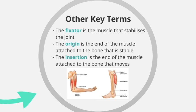Some other key terms: the fixator is the muscle that stabilises the joint. While movement is taking place at a joint, fixator muscles keep that particular joint stable. In the case of the biceps and triceps working at the shoulder and elbow, the trapezius acts as a fixator at the shoulder.